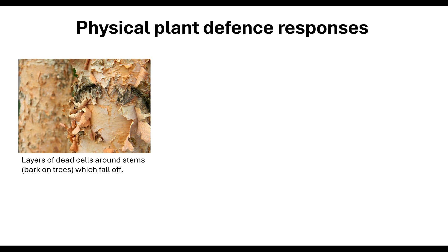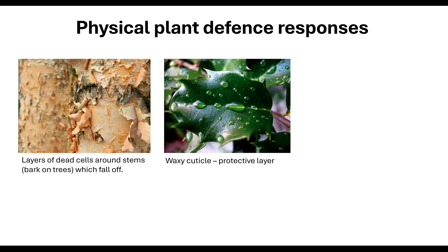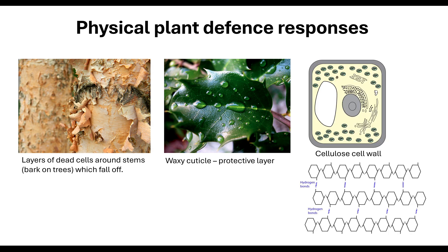So how do plants defend themselves? Because they can't get up and walk away, they have specific defence mechanisms. The physical ones include layers of dead cells around the stems — for example the bark on trees, which can fall off — the waxy cuticle, which is a protective layer, and the cell wall itself. These all act as barriers to prevent pathogens from entering the plant's transport system.